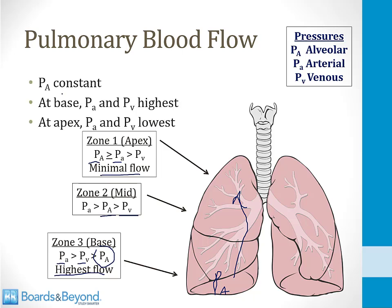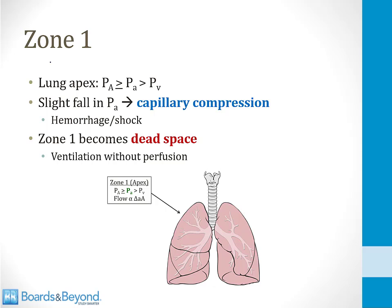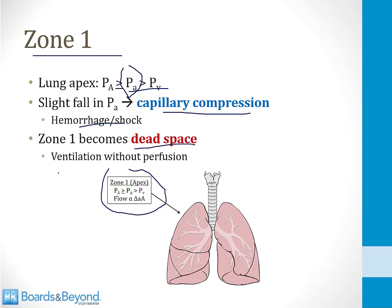Alveolar pressure is constant throughout; at the base, both arterial and venous pressures are highest, and at the apex they are lowest, so the apex has the least flow and the base has the most. A key high-yield point about zone one: if arterial pressure falls slightly — as in hemorrhage or shock — capillary compression occurs and zone one becomes dead space. It's ventilated but not perfused. A small drop in blood pressure can turn zone one into dead space.